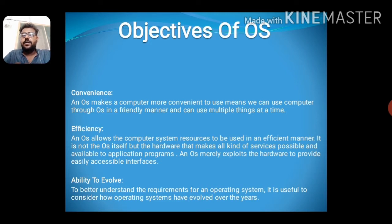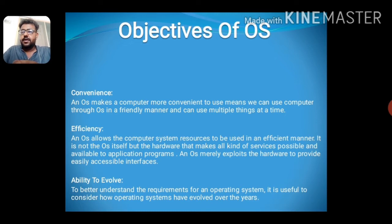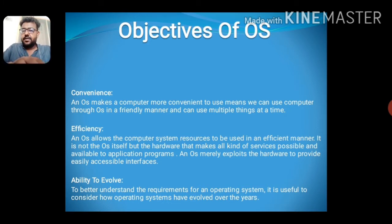The objectives of an OS: convenience — an OS makes a computer more convenient to use, meaning we can use the computer in a user-friendly manner and can use multiple things at a time. Efficiency — an OS allows the computer system resources to be used in an efficient manner. It is not the OS itself but the hardware that makes all kinds of services possible and available to application programs, and the OS merely exposes the hardware to provide an easily usable interface.